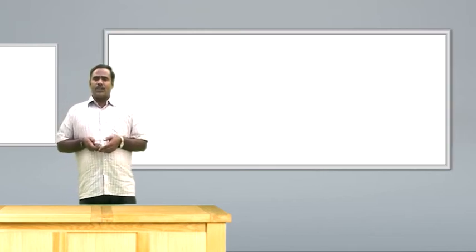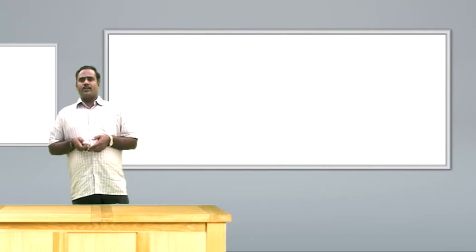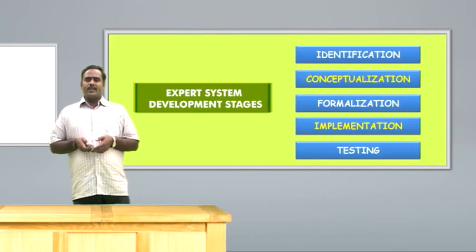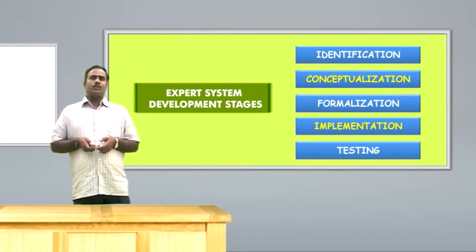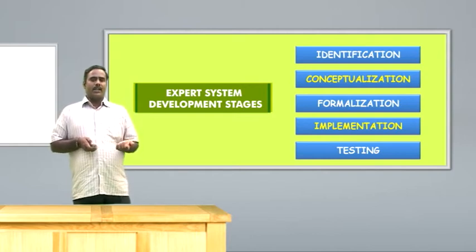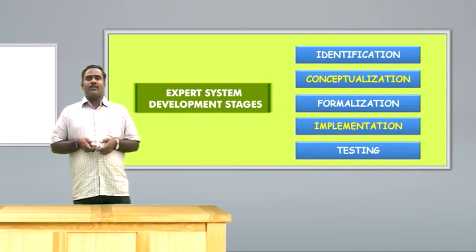Expert system development has five important stages. The first is identification, where we analyze the task — what type of task to take, what are the input and output requirements, where to use the expert system, what are the cost and time frame involved, and what type of domain expert and knowledge engineer to choose. Depending upon the topic, we have to choose the domain expert as well as the knowledge engineer.